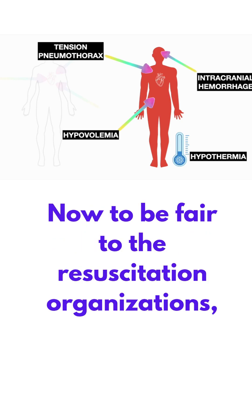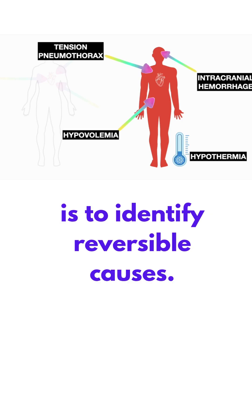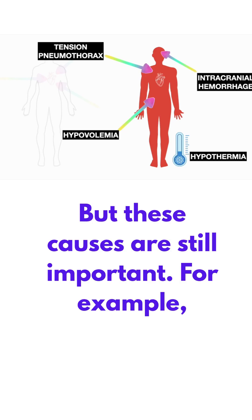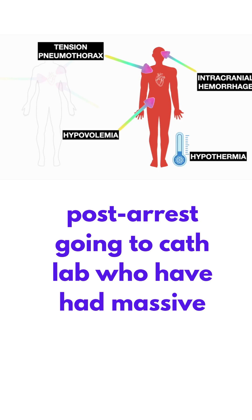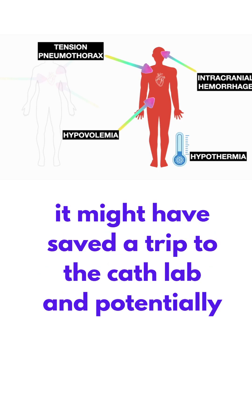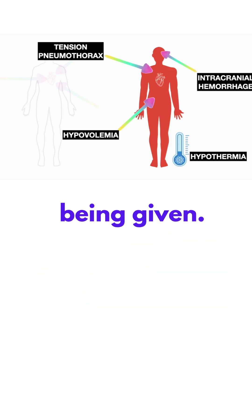Now to be fair to the resuscitation organizations, the point of the H's and T's is to identify reversible causes, which is why something like intracranial hemorrhage is not included. But these causes are still important. There are many examples of patients in arrest or post-arrest going to the cath lab who have had massive intracranial bleeds. Considering this might have saved a trip to the cath lab and potentially prevented anticoagulant and antiplatelet medications being given.